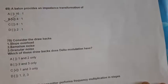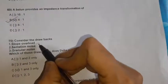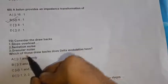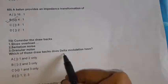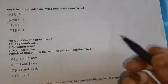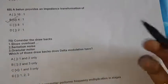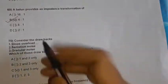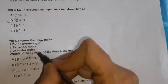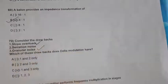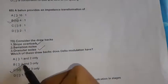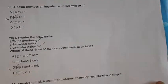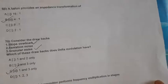Question 70: Consider the drawbacks of delta modulation — slope overload, serration noise, granular noise. Delta modulation has slope overload and granular noise, 1 and 3 only. Option C is the right option.